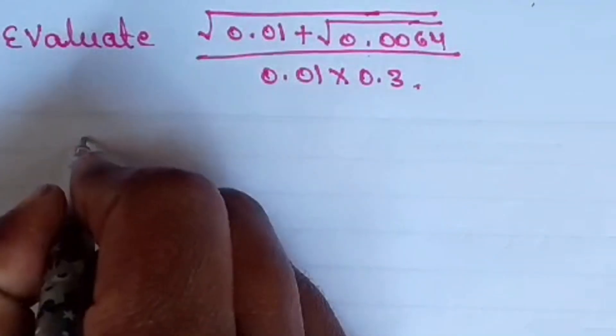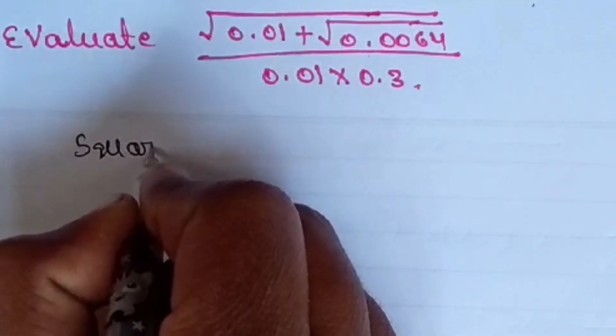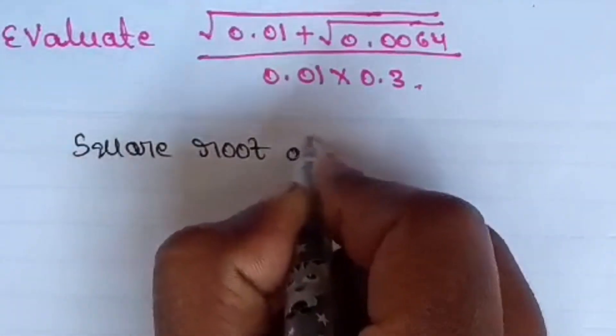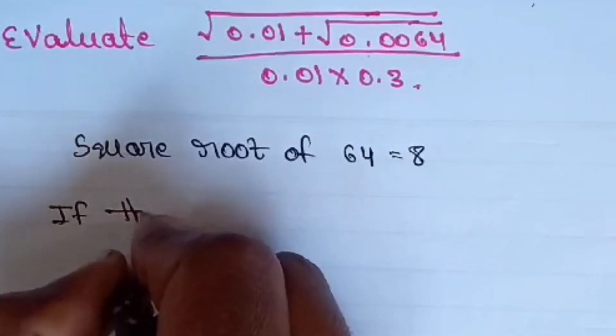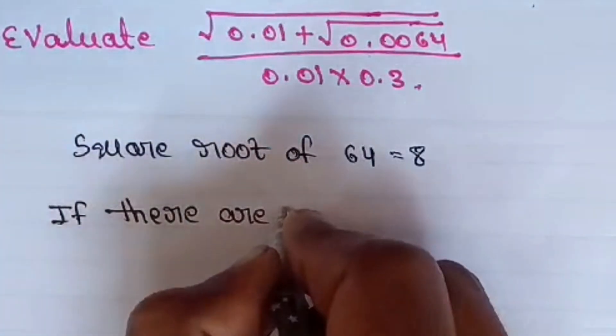Hi friends, hope you are doing good. In this session we'll discuss this simple and interesting question. This looks like a typical question but it's very easy. We know that square root of 64 is nothing but 8.